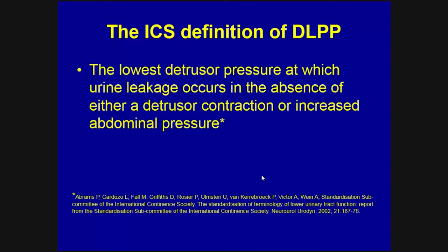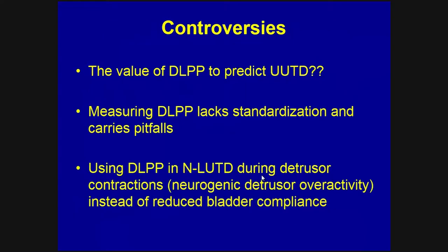The ICS today defines the Detrusor Leak Point Pressure as the lowest detrusor pressure at which urine leakage occurs in the absence of either a detrusor contraction or increased abdominal pressure, according to the last terminology report published in 2002. However, today we see several controversies regarding the measurement and clinical interpretation of Detrusor Leak Point Pressures. The cutoff value to predict upper urinary tract damage is debatable, measuring DLPP lacks standardization, and in many studies DLPP in neurogenic lower urinary tract dysfunction has been misused as detrusor contractions instead of reduced bladder compliance.